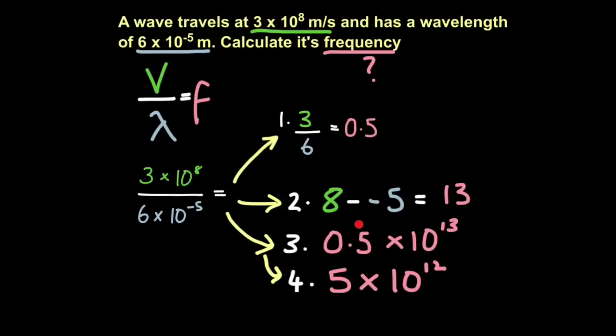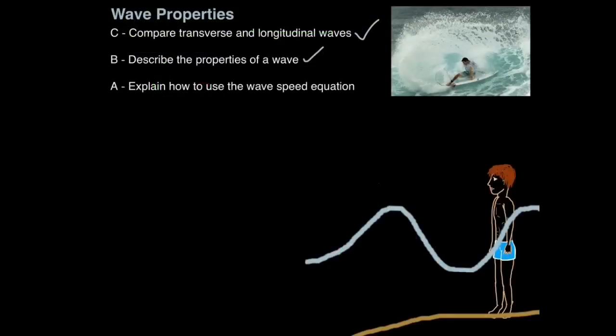So it's 5 times 10 to the 12 because we've moved that decimal point forward. And that's how we explain how to use the wave speed equation.